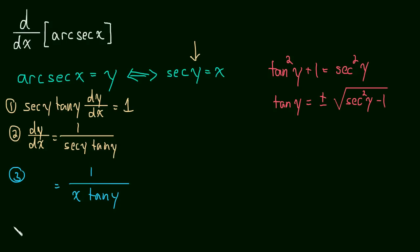And now, this next step might seem a little bit baffling, and I'll explain it in a minute. But I'm going to write this as the absolute value of x times the positive square root of secant squared y minus 1.